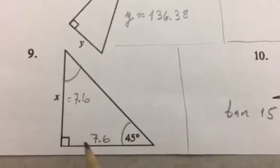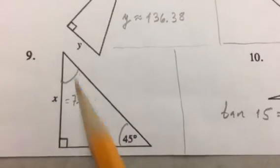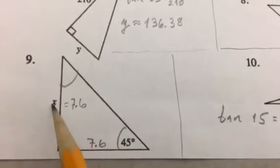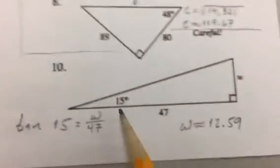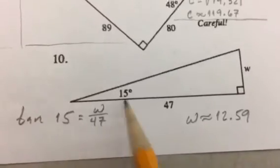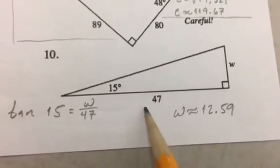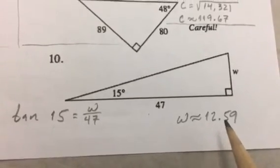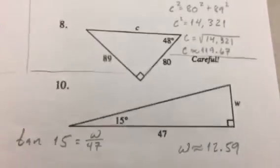Last two—this one here, this number got cut off in the page, I just made up something, 7.6. The point is that on a 45-45 right triangle, the two legs are the same, so whatever number this is, x is the same number. Here we go, number 10, the last one: tangent of 15 is w over 47, so that gives you about 12.59 for that. Okay, hopefully that was helpful. If you have any questions, just leave them in the comment thread. Thanks, bye.